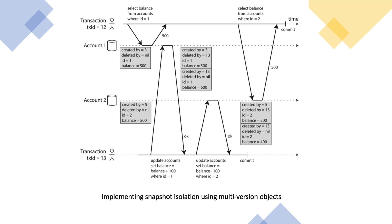Each row also has a 'deleted_by' field, which is initially empty because it has not been deleted. If a transaction deletes a row, the row isn't actually deleted from the database; instead it is marked for deletion by setting the 'deleted_by' field to the ID of the transaction that requested the deletion. At some later time, when it is certain that no transaction can access the deleted data any longer, a garbage collection process in the database removes any row that has been marked for deletion and frees the space.